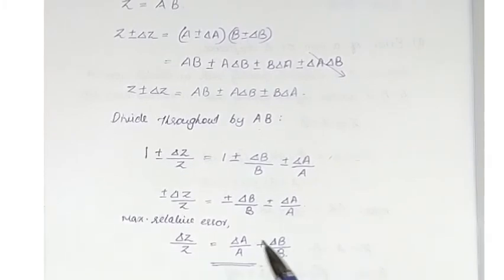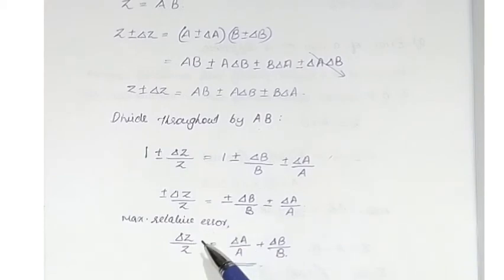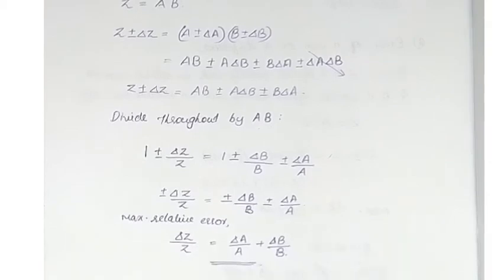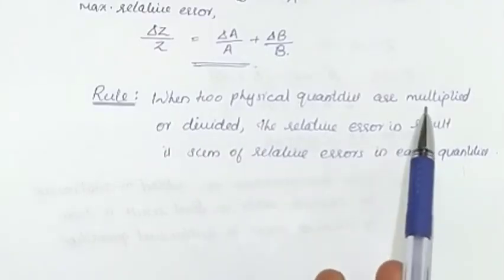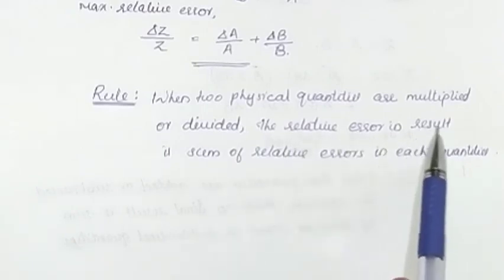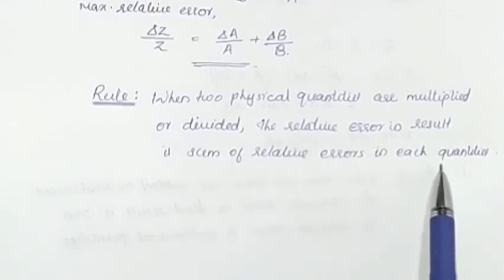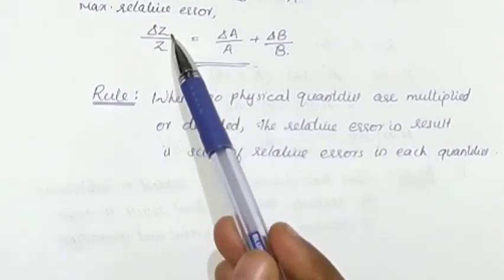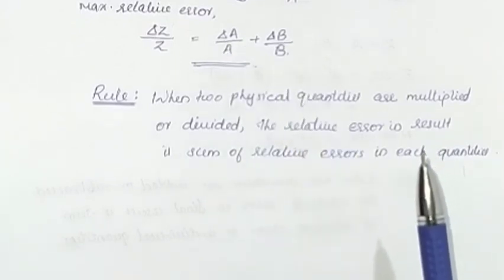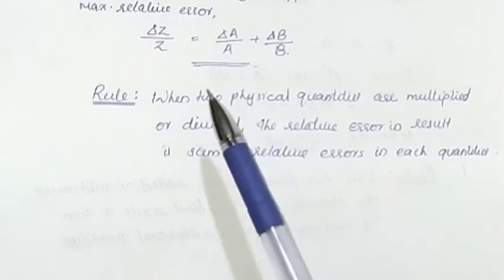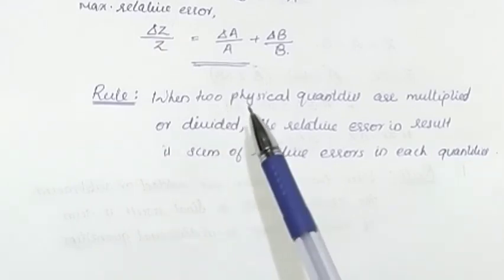For the case of product, the maximum relative error is delta z/z = delta a/a + delta b/b. For division also, the maximum relative error is the same. Thus the rule is: when two physical quantities are multiplied or divided, the relative error in the result is the sum of the relative errors in each quantity.